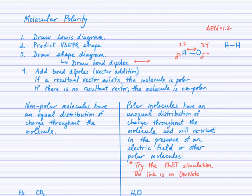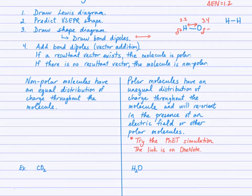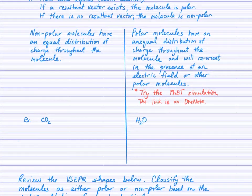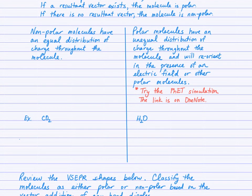The significance of that is that non-polar molecules have essentially an equal distribution or symmetrical distribution of charge throughout the molecule, whereas polar molecules do not. There's a PhET simulation that shows you how polar molecules reorient in the presence of an electric field. And so I put that link up on OneNote under this unit's tab. So I recommend you check that out.